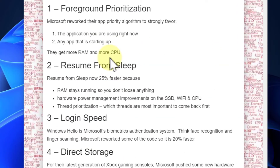Let's get on with the good. Foreground prioritization: Microsoft has reworked their app priority algorithm so that it strongly favors apps that are in the foreground or an app that's starting up. Those apps get more memory and CPU.